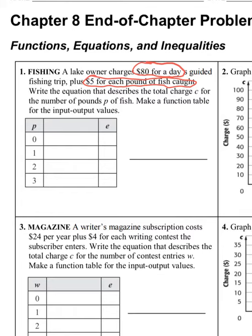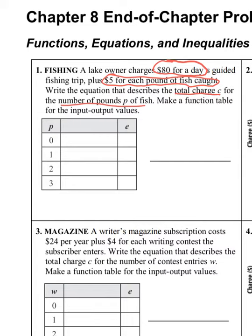It says write the equation that describes the total charge C for the number of pounds P of fish, and make a function table for the input/output values. P is the pounds of fish caught — zero, one, two, three pounds — and C is the total cost. Since it's P and C, we start with C equals, just like we'd start with Y equals if it were X and Y.